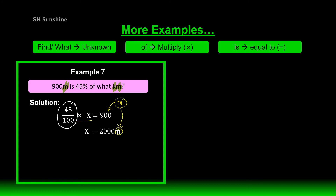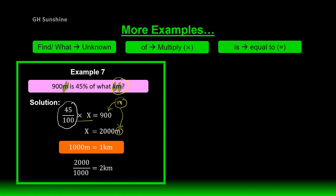Is 2000 meters the final answer? No — you need to change the unit because the question asks for kilometers. Recall: 1000 meters equals 1 kilometer. So 2000 divided by 1000 equals 2. Therefore 2 kilometers is the final answer for Example 7.